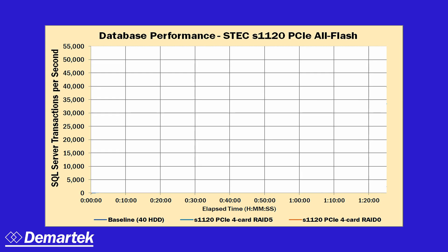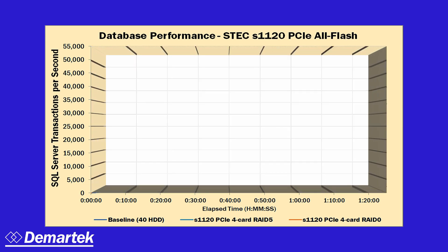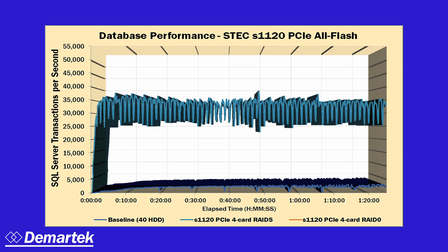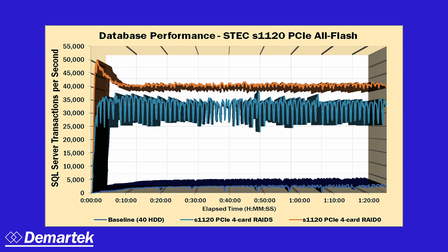For the first set of tests, we ran the Microsoft TPCE Benchmark Kit with the traditional fiber channel SAN based hard disk storage system. We then configured the four PCIe SSD accelerators into two configurations: a RAID-5 configuration and a RAID-0 configuration. Next, we moved the database files to these PCIe SSD accelerators and repeated the tests. With the RAID-5 configuration, we obtained approximately a 13x improvement in database transactions per second. With the RAID-0 configuration, we obtained approximately a 16x improvement.